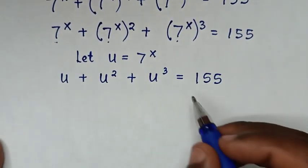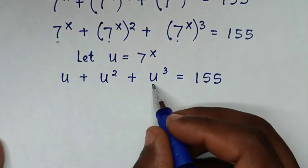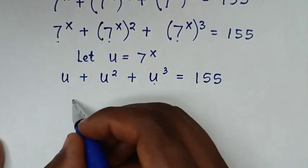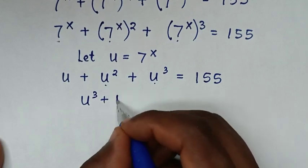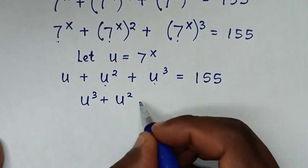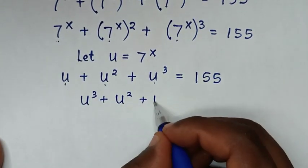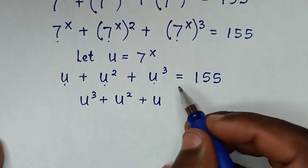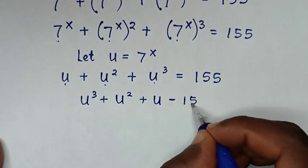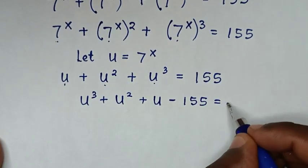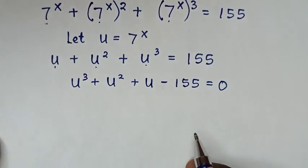We take 155 to the left side and rearrange, giving us u power 3 plus u squared plus u minus 155 is equal to 0.